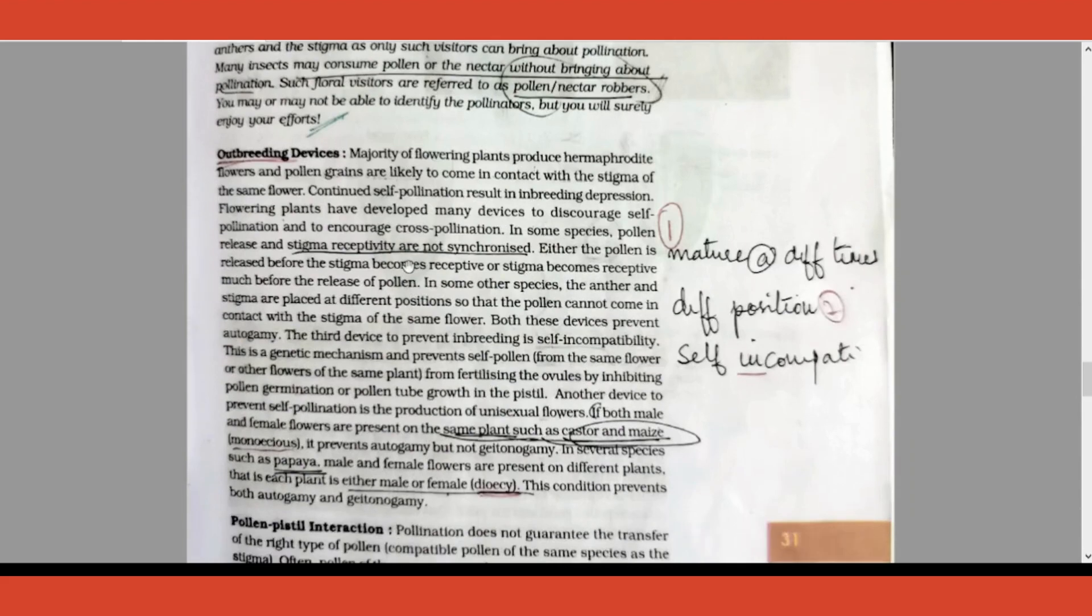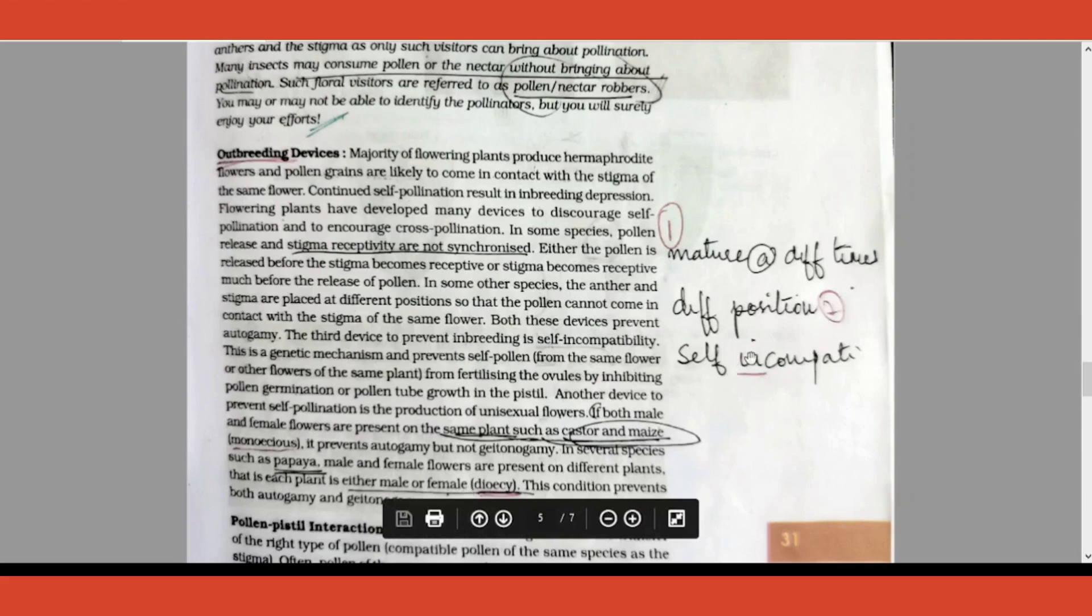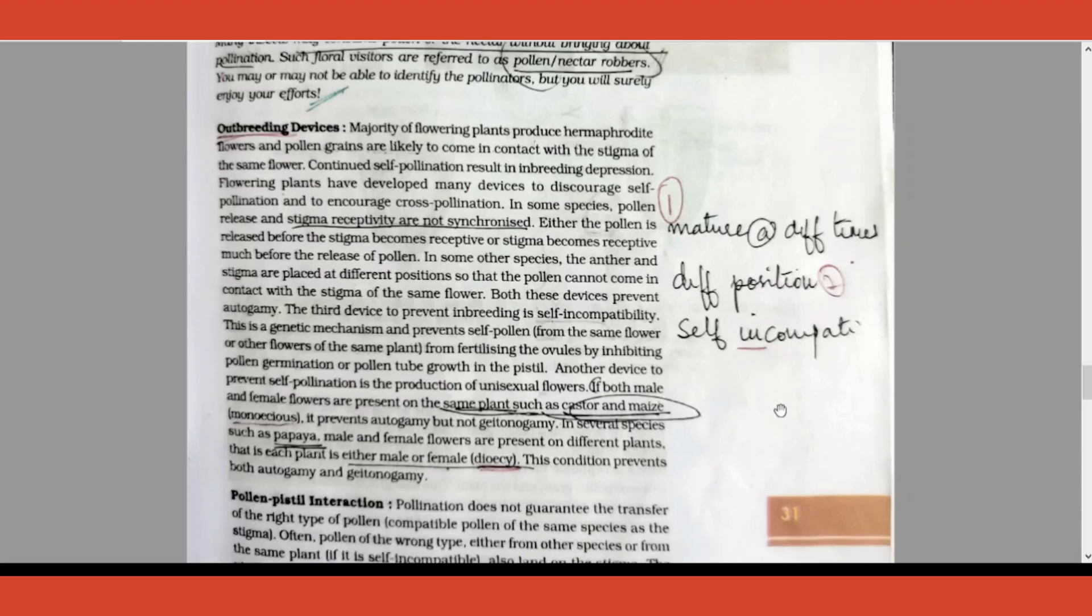Coming to outbreeding, I told you what is outbreeding. All the mechanisms that the plant does in order to make sure cross pollination is happening, those are called outbreeding devices. I've written it down for you. Instead of reading the whole thing, you can note it down: anther and stigma can mature at different times, different position of anther and stigma, then last one self-incompatibility, meaning even if pollen grain falls on the stigma of the same flower it will not pollinate. These are important devices to prevent self-pollination, in other words to promote cross-pollination.